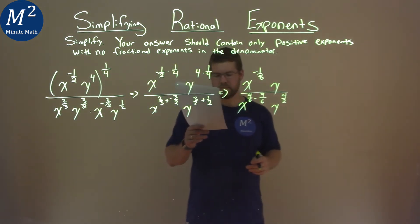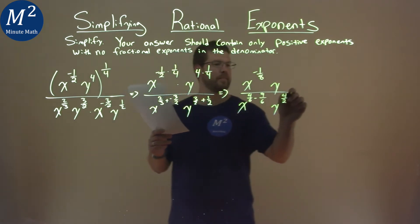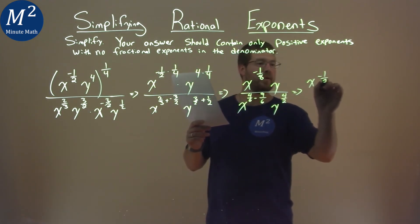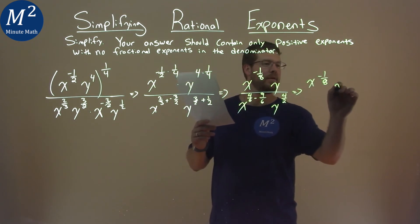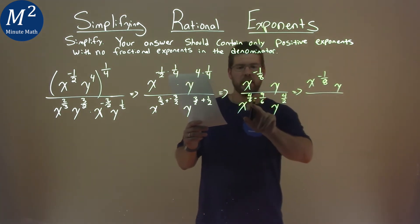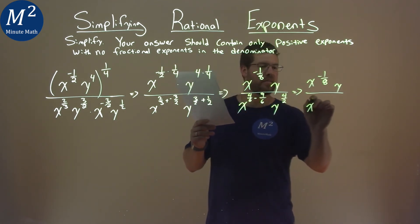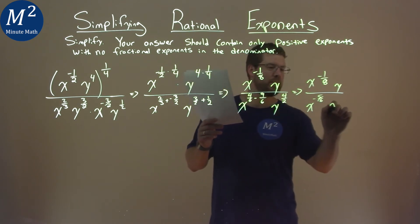Simplify a little more. We have x to the negative one-eighth power, y over four-sixth minus nine-sixth is negative five-sixth. So we have x to the negative five-sixth here, and four-halves is the same thing as two, y-squared.